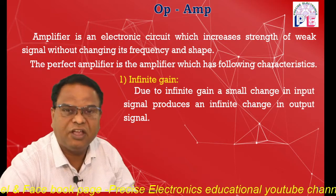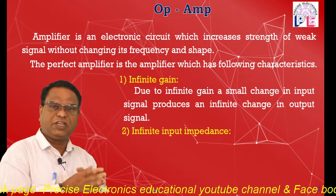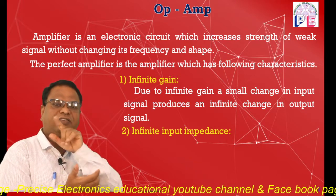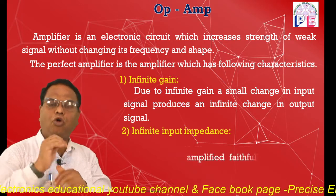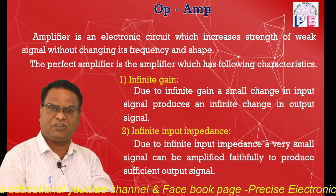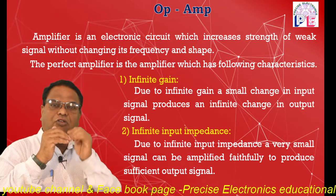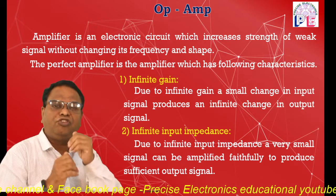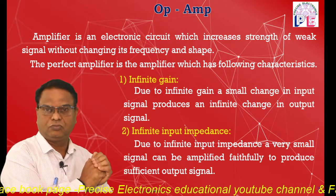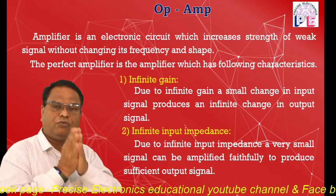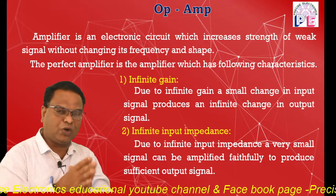The second characteristic is infinite input impedance. Impedance, denoted Zᵢ, is measured in ohms and is also known as resistance. With very high input impedance, a small change in input signal produces a sufficient change in output signal, because by Ohm's law, V = IR.